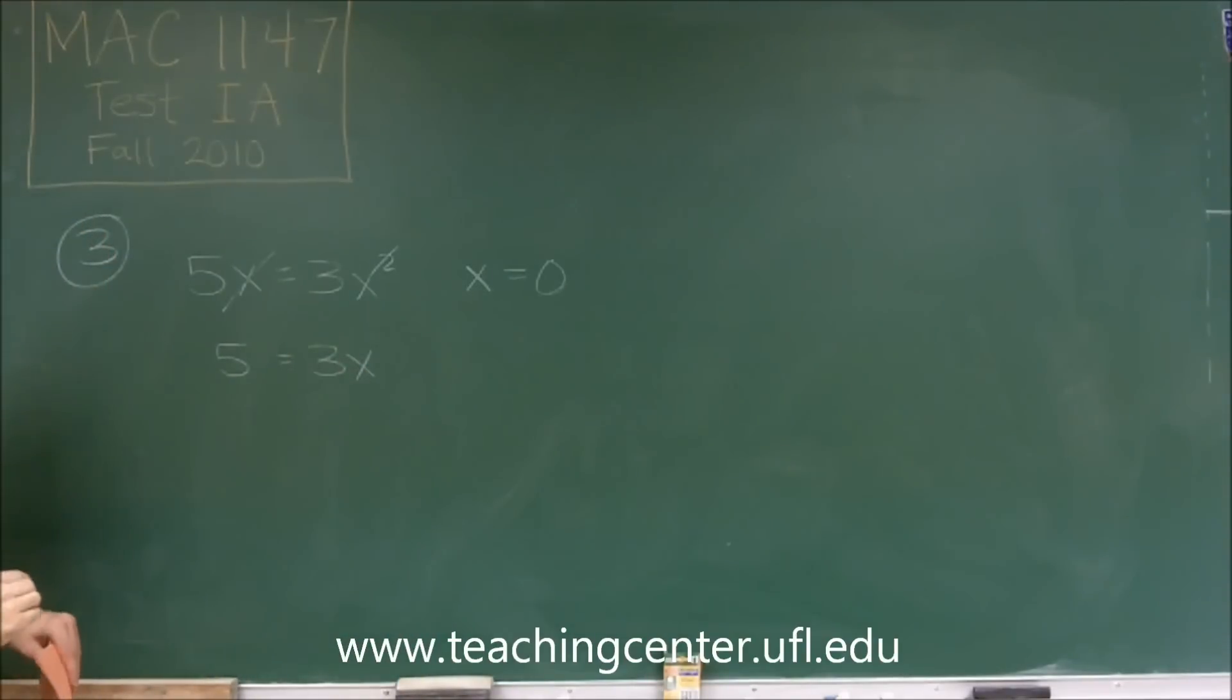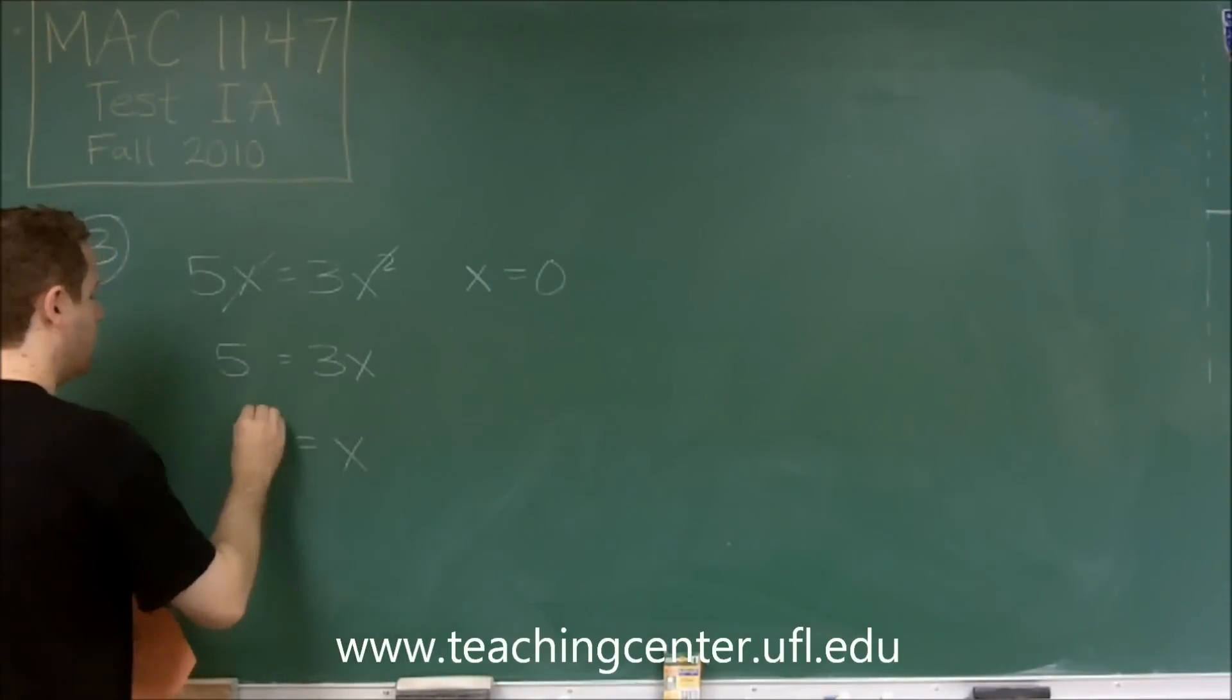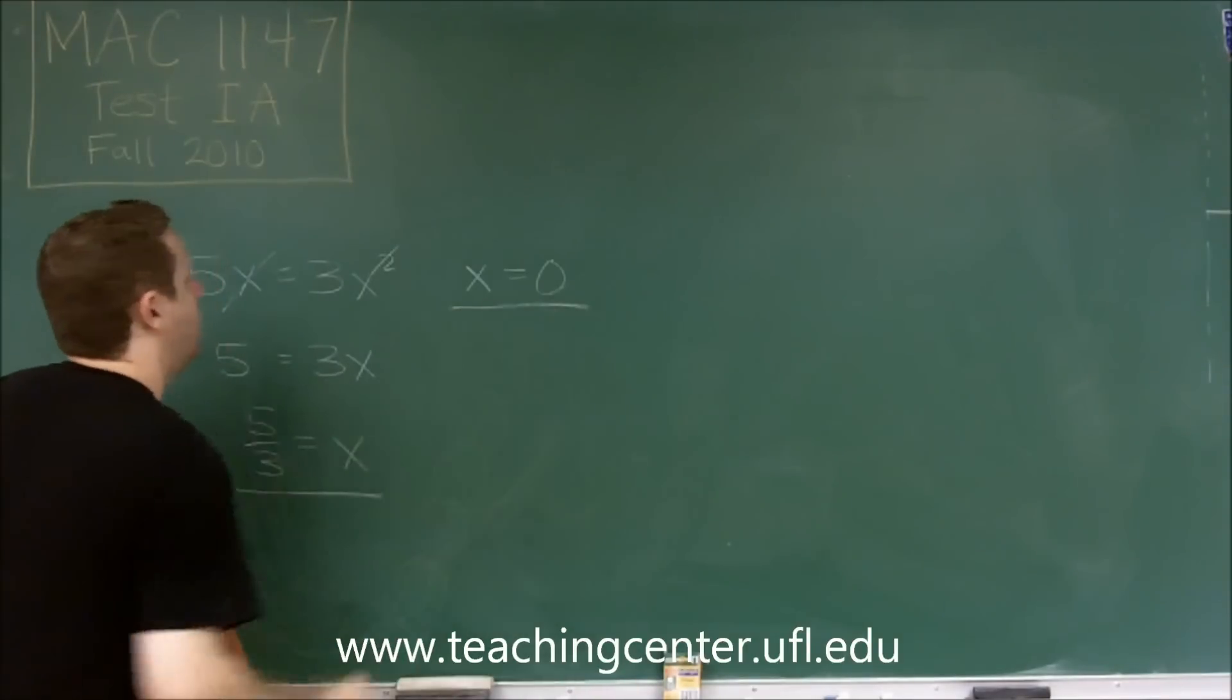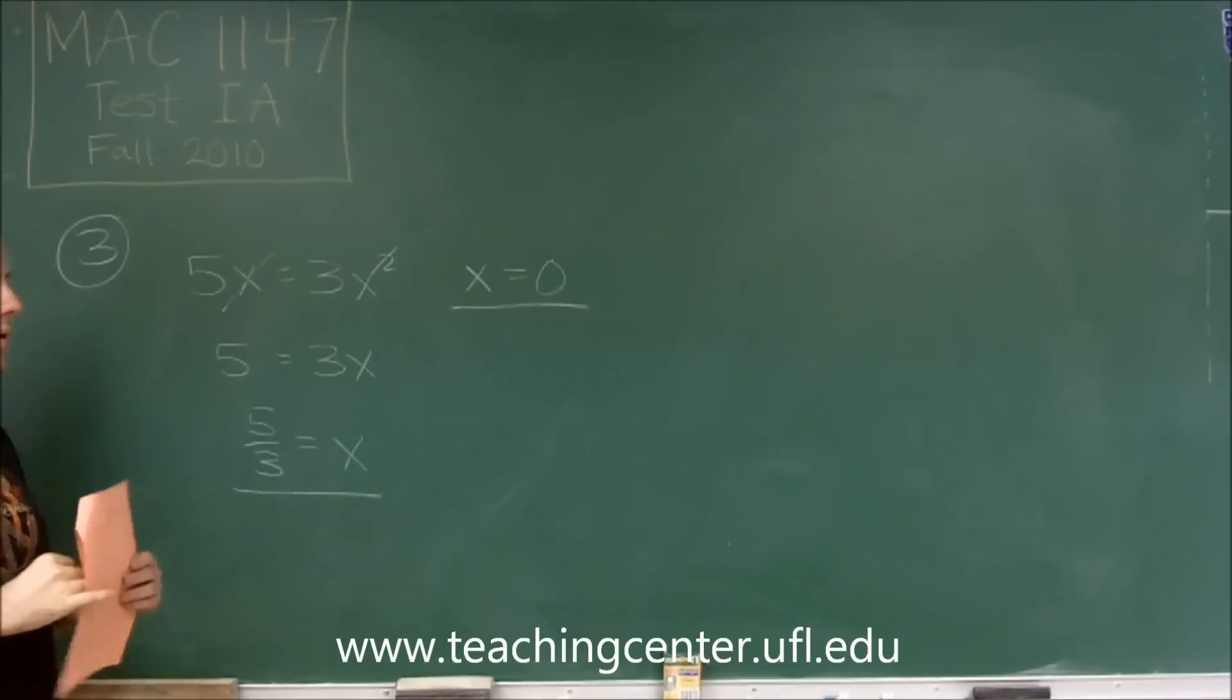to 5 equals 3x. That has a clear solution by just dividing by 3. So you have two solutions here, and that's what you need to be careful about.